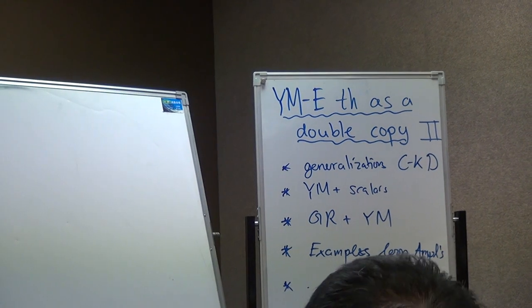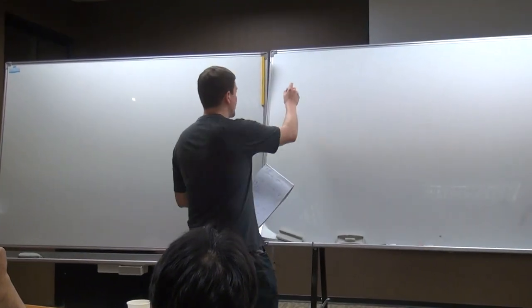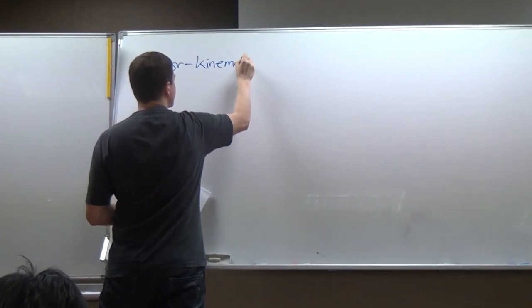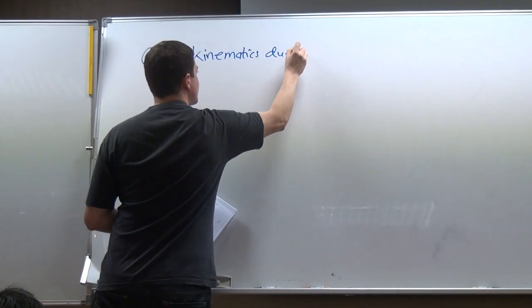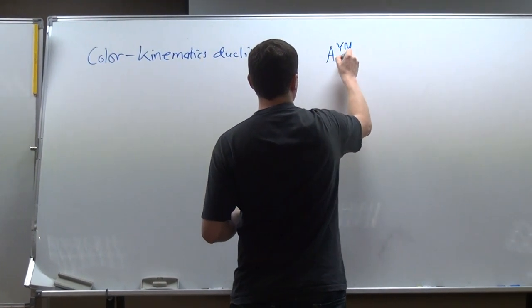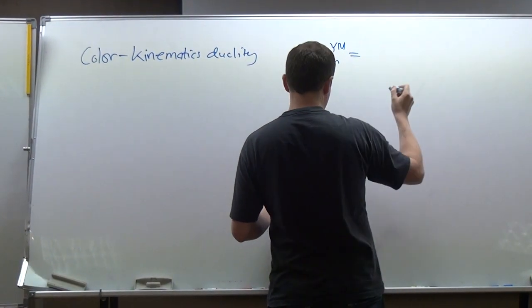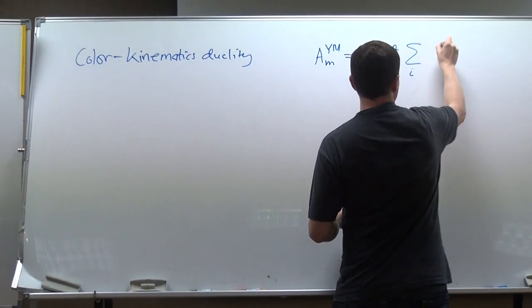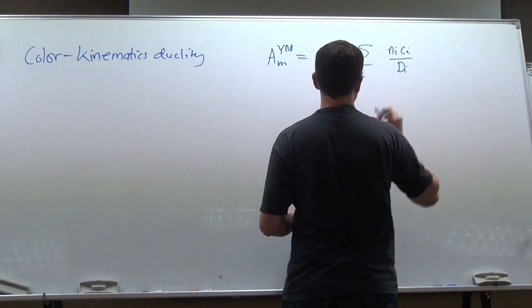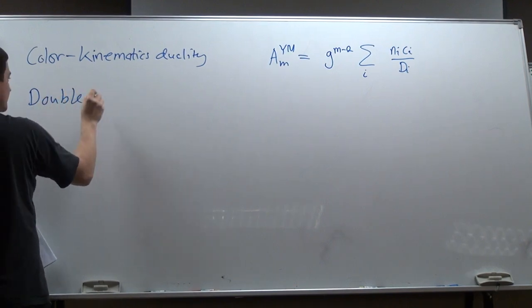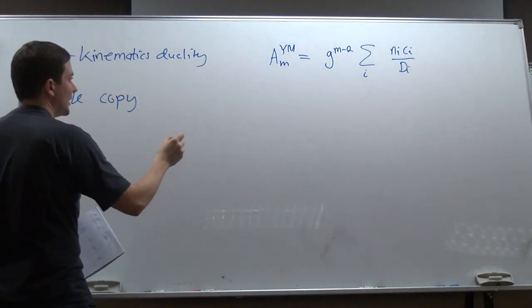Just to recap a little bit about last time and also LSV's colloquium yesterday: I told you about color-kinematics duality, and the simplest way to see it is to write the Yang-Mills amplitude in terms of a formula. At tree level, it's a sum over all graphs with numerators, color factors, and denominators — propagators. The corresponding double copy gives gravity.